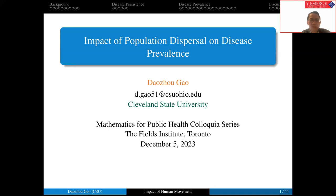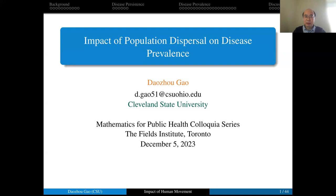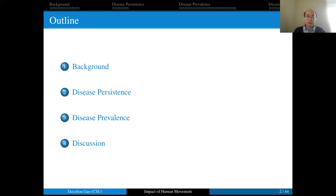I'm very glad that Daozhou is here today to talk about the impact of population dispersal on disease prevalence. The platform is yours now, Professor Gao. Thanks so much to Professor Wu for the kind introduction, and hello everyone. It's my pleasure to speak here today. Today's talk is mainly based on joint work with Professor Yuan Lou. My presentation is divided into four parts: first, I will introduce a patch epidemic model; then in parts two and three, I will show how human movement affects disease persistence and disease prevalence, respectively; and finally, a brief discussion.